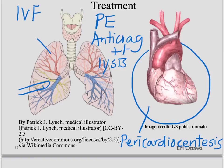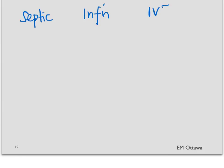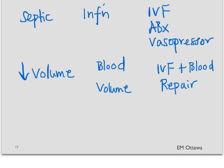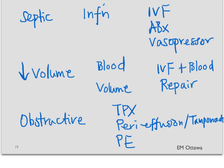In summary, we discussed three different kinds of shock. First, septic shock where the patient might have a source of infection — the treatment is large volumes of IV fluids, antibiotics, and vasopressors. The next shock we looked at is hypovolemic shock, either due to blood loss or volume loss — the treatment is IV fluids, blood if necessary, and stopping of ongoing blood loss. Lastly, we talked about obstructive shock due to a tension pneumothorax, pericardial effusion, or a pulmonary embolus, and we discussed its treatment.